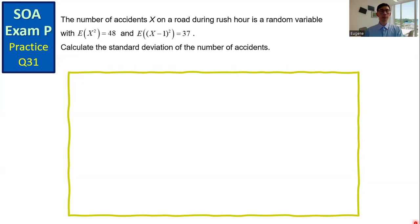SOA Example Practice Question Number 31. The number of accidents X on a road during rush hour is a random variable with expected value of X squared equal to 48, and the expected value of the square of X minus 1 equals 37. Calculate the standard deviation of the number of accidents.